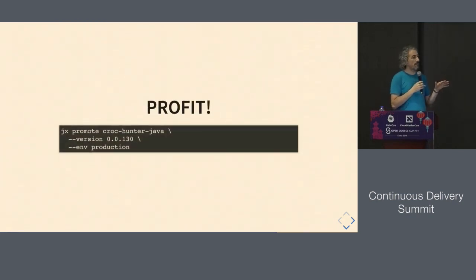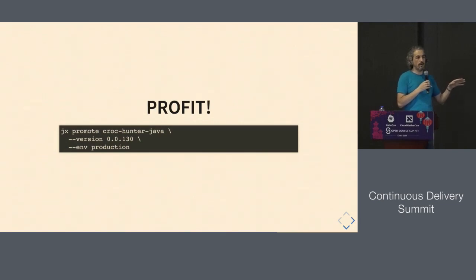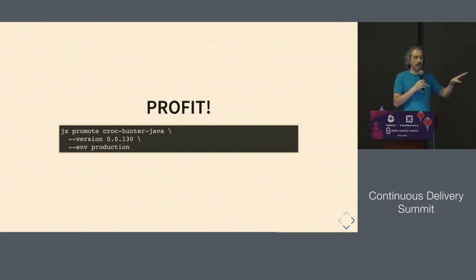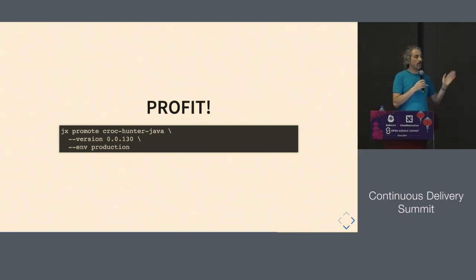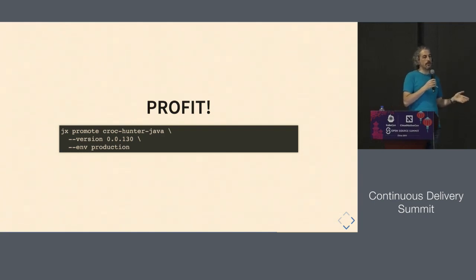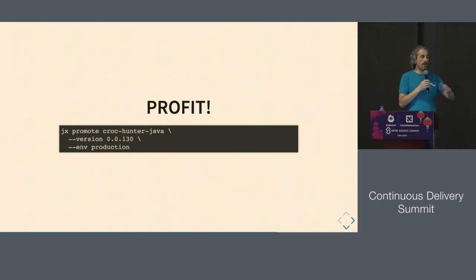To do that, you just use your normal Jenkins X promote command. When you install the Istio add-on and the Flagger add-on, Istio gets automatically enabled in your production environment, in the JX production namespace. So when you do a promote, this will automatically do a canary rollout — it's no longer deploying to every user on your Kubernetes cluster all at once, but it's going to do the canary rollout.